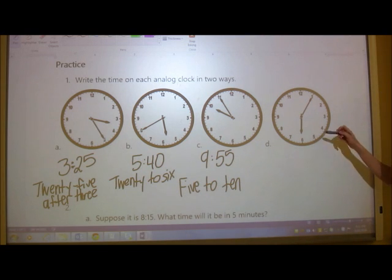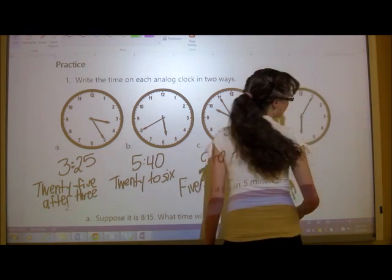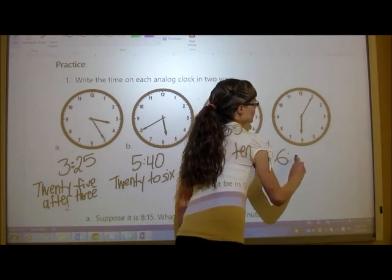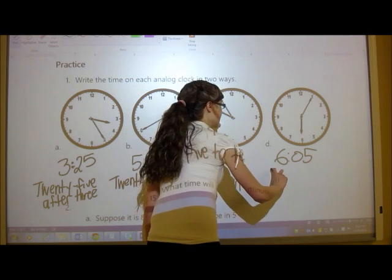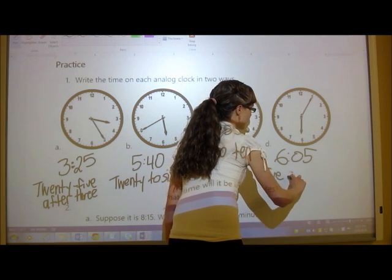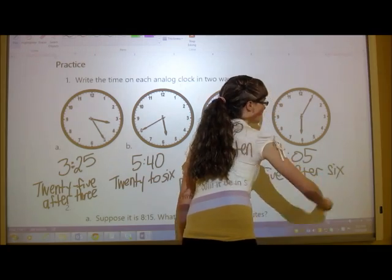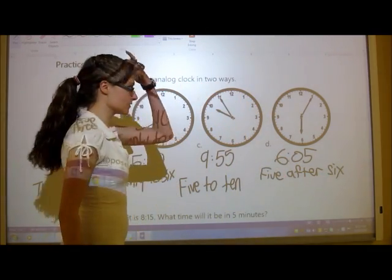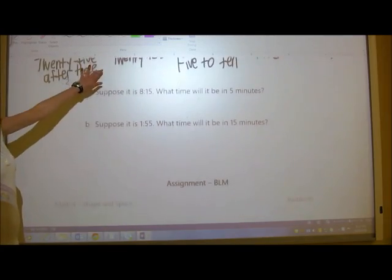And then the last one, that was the same as the digital clock up there. I don't know what I was thinking, but you would write 6, 0, 5. And then another way that you would write this is 5 after 6. Or you could say 5 past 6. Doesn't really matter.